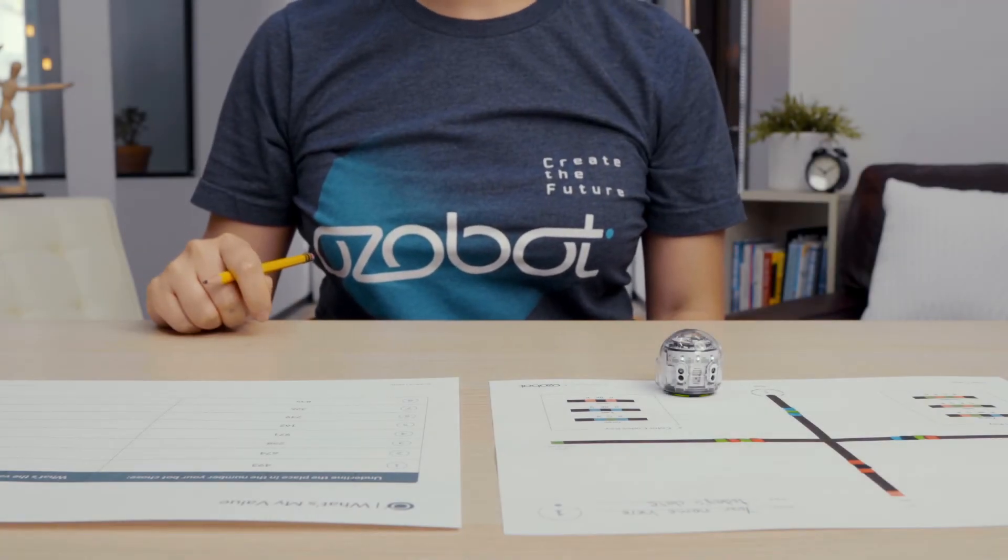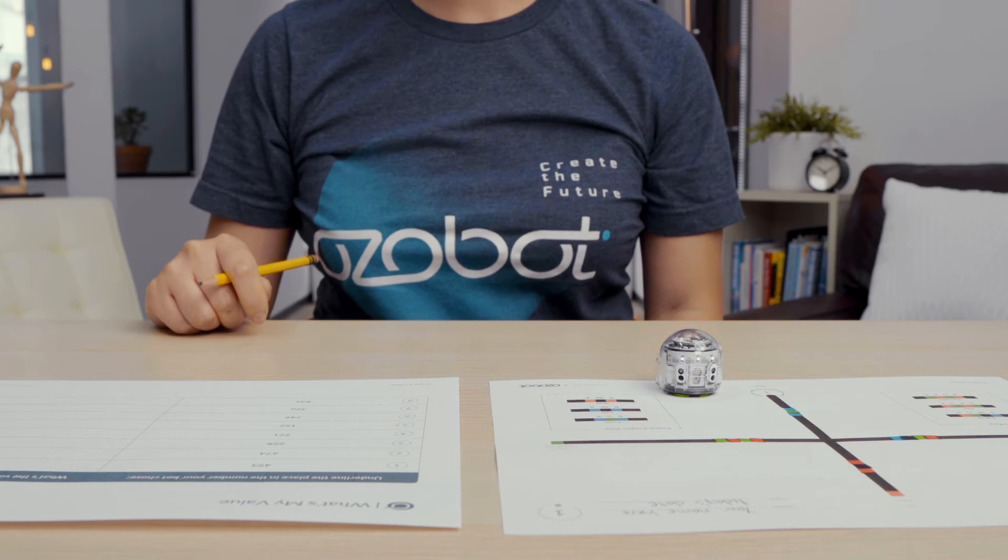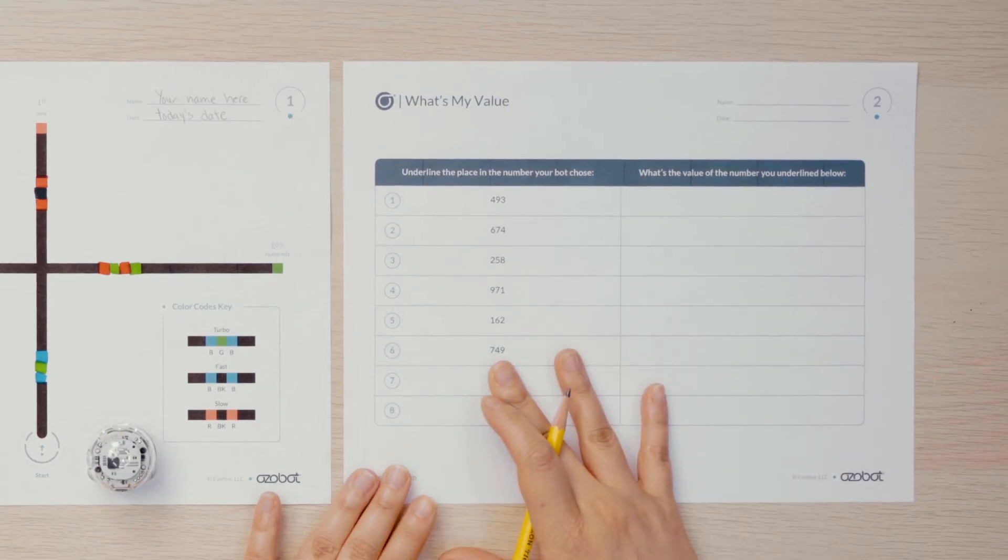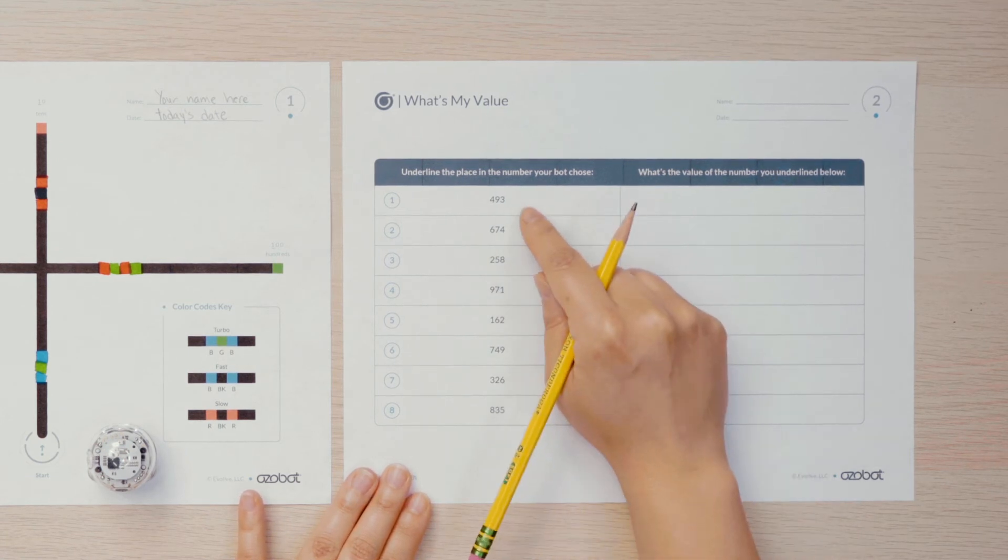Now that Ozobot has given you a place value, it is time to find that place in a three digit number. On your What's My Value page, you will find a list of three digit numbers. You will begin with the first number, 493.